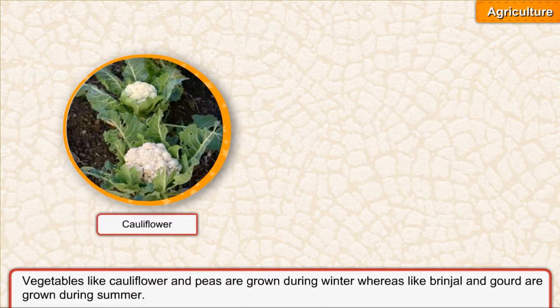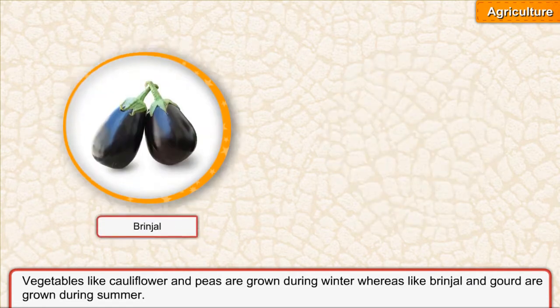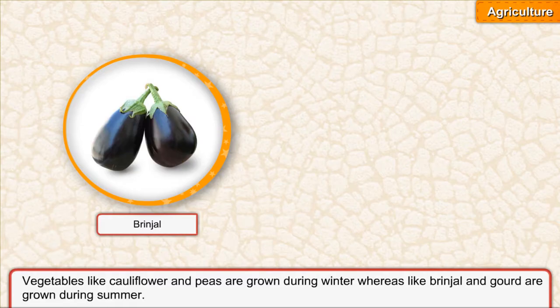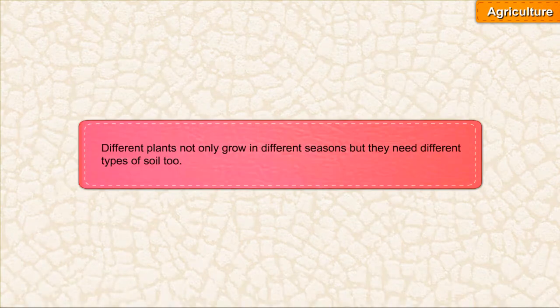Vegetables like cauliflower and peas are grown during winter, whereas vegetables like brinjal and gourd are grown during summer. Different plants not only grow in different seasons but they need different types of soil too.